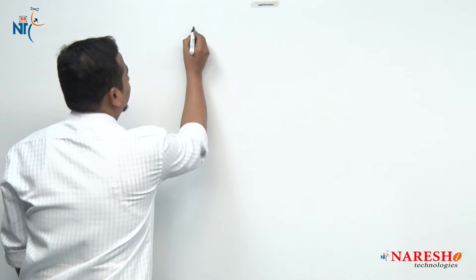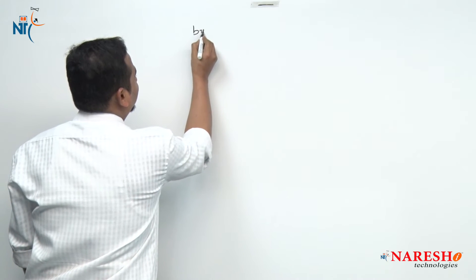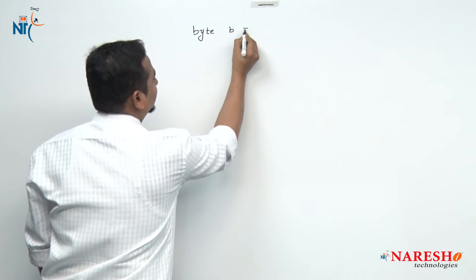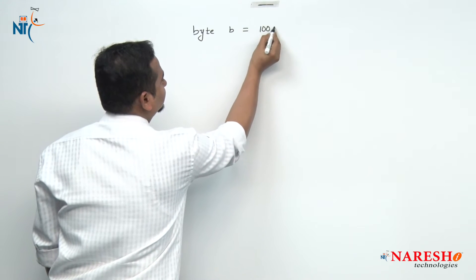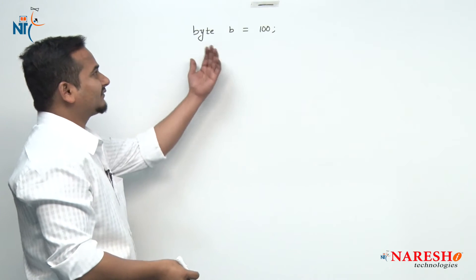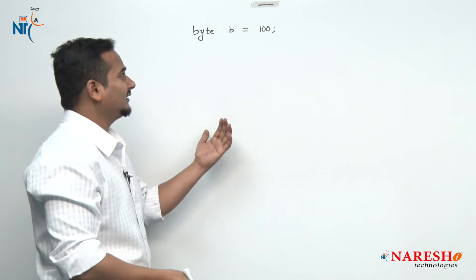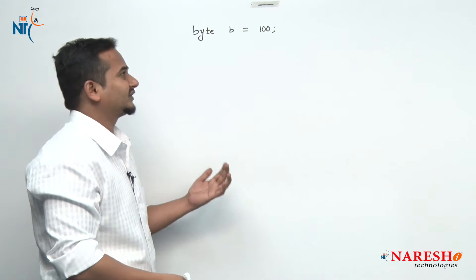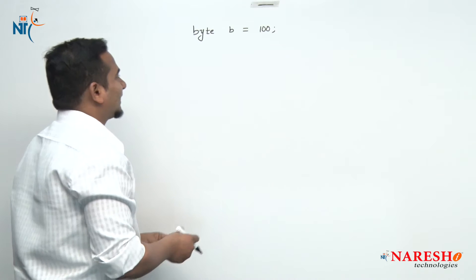I am talking only about the internal functionality of the compiler when assigning the value to a variable with the help of another variable. Observe here syntax-wise — let me take one data type like byte: byte b = 100. What type of internal functionality is done by the compiler we already discussed in the last video, so I am not highlighting that again.